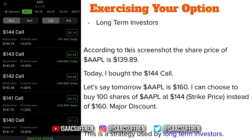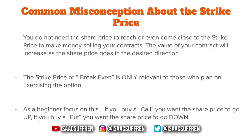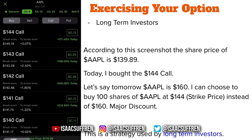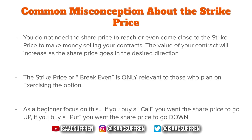The strike price and break-even — something you'll see on Robinhood — is only relevant to those who plan on exercising the option. Unless you have the money to buy 100 shares of Apple at $140 a share, the strike price and break-even don't matter to you. If you just want to sell the contract back to the market and collect the money, do not worry about the strike price or break-even. As a beginner, don't think about it.